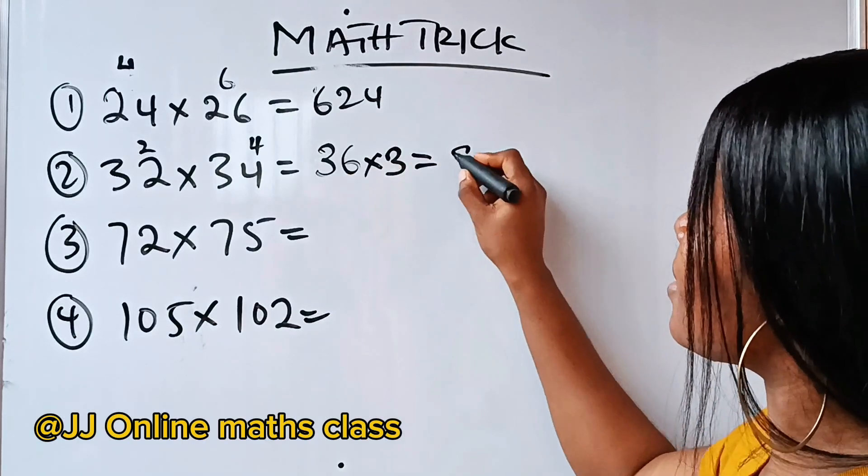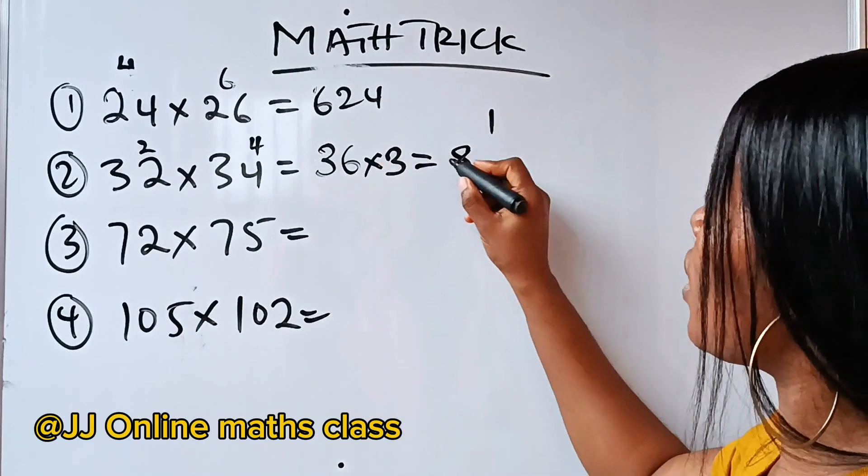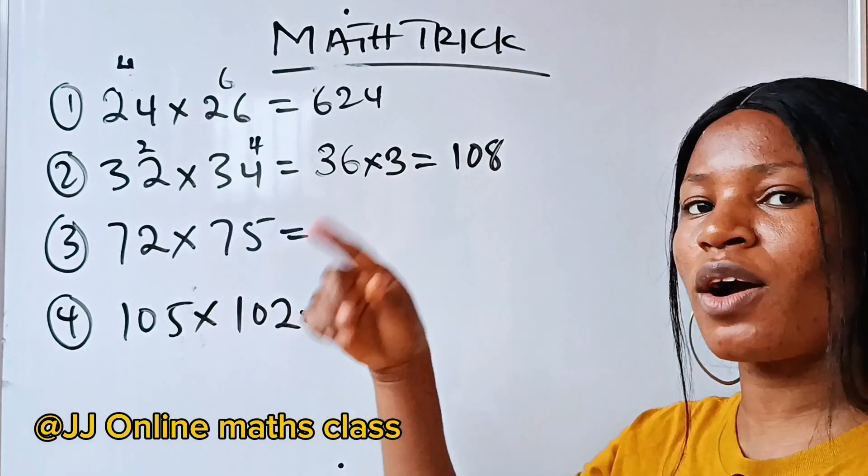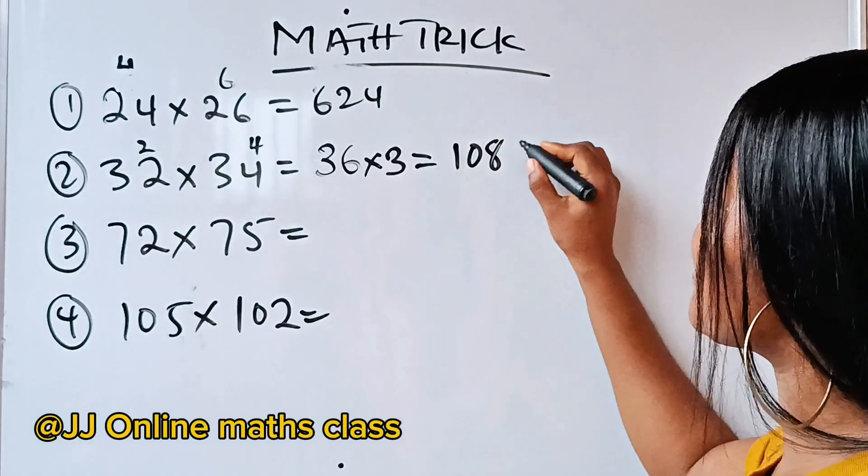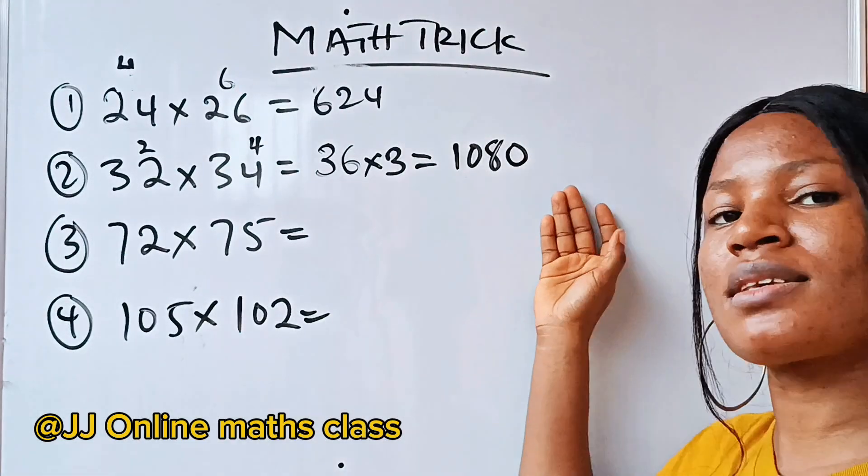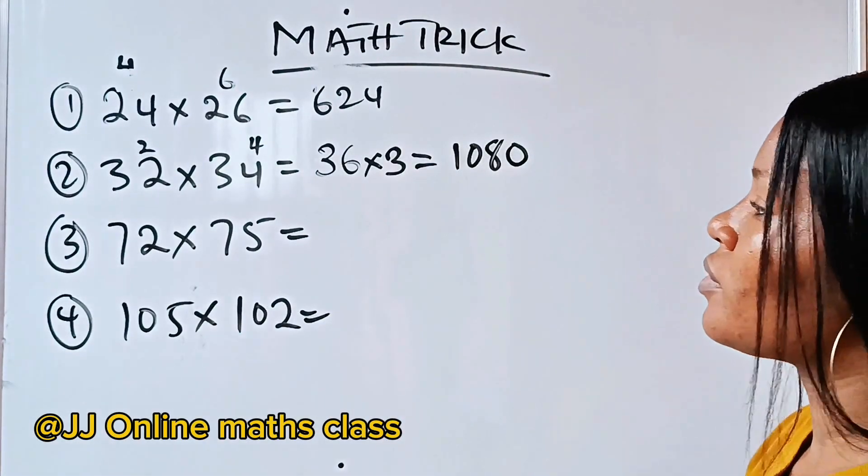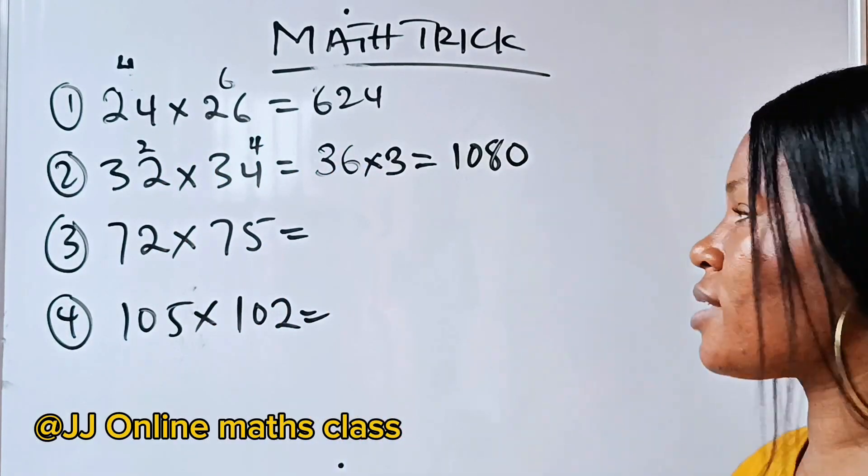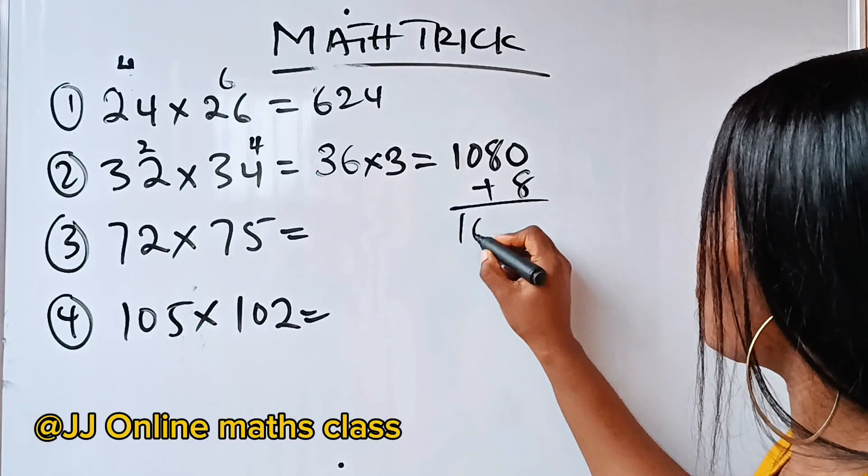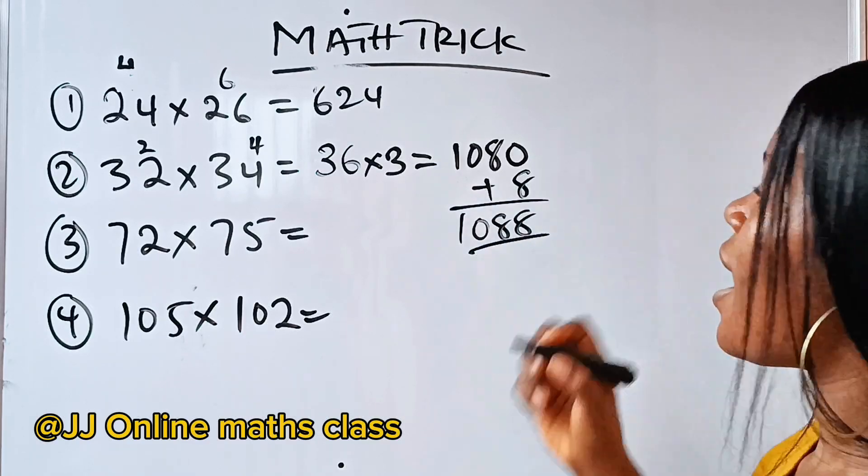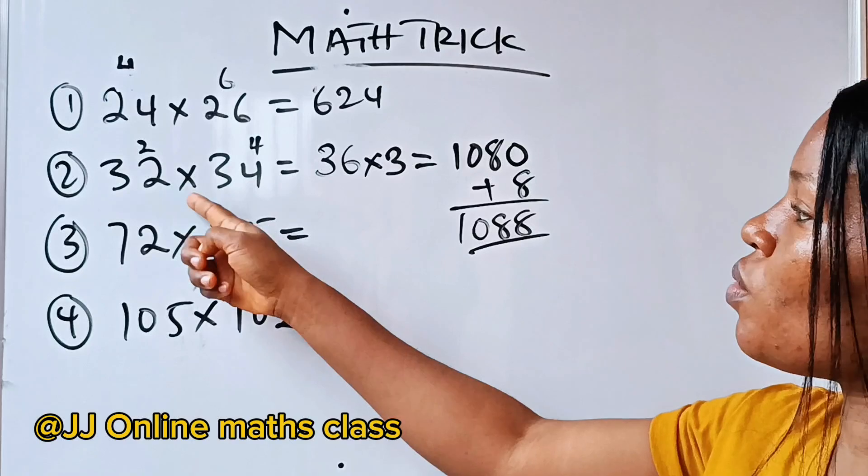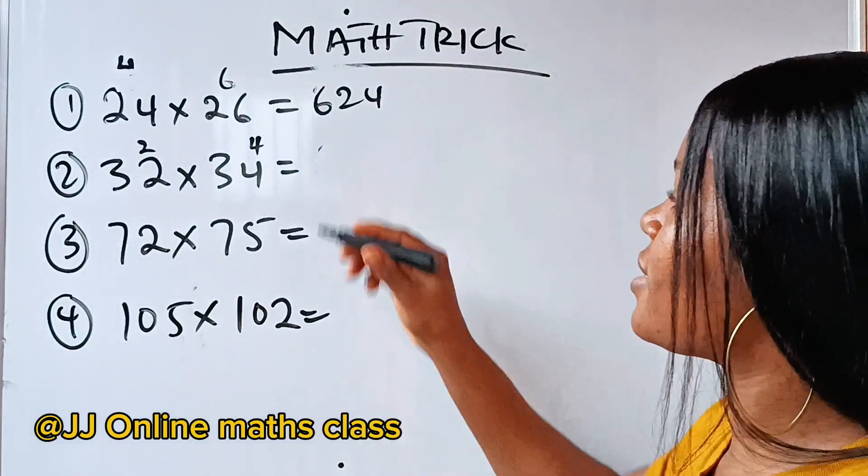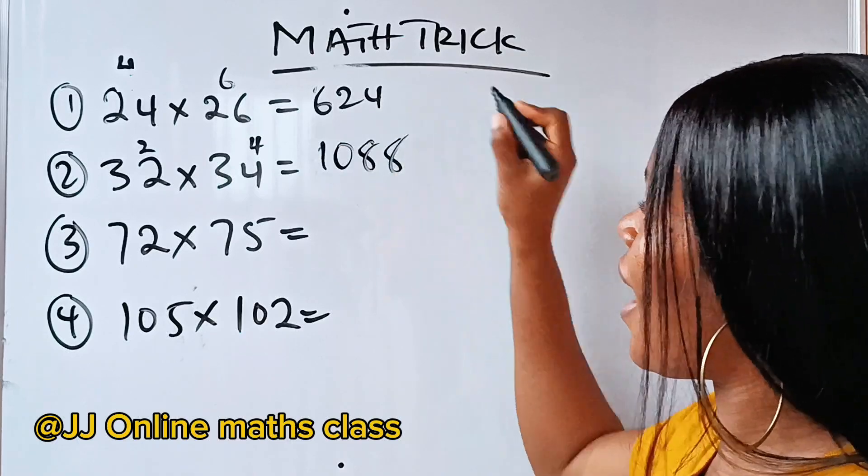We are going to have 3 times 6 is 18. 3 times 3 is 9 plus 1 is 10. So, we have 110. Then, this is 10, we are going to add 0 in front. So, we add 0. Just keep this aside. Now, we are going to multiply 2 by 4 to give us 8. Add that 8 to this. You have 1,088 and that is the solution. So, 32 multiplied by 34 will give us 1,088. You can press your calculator.